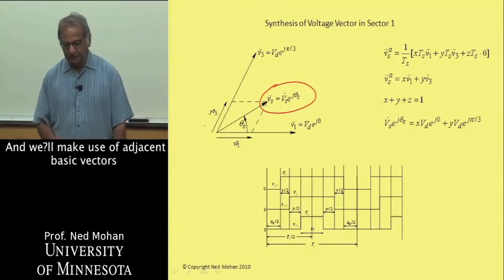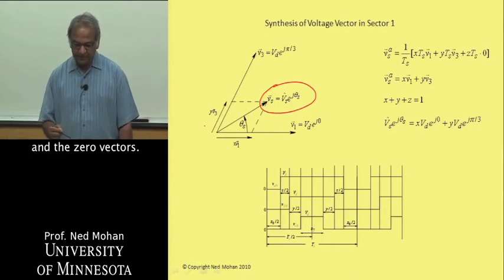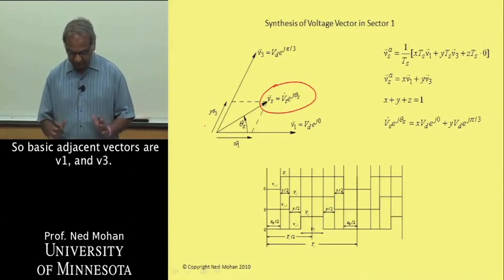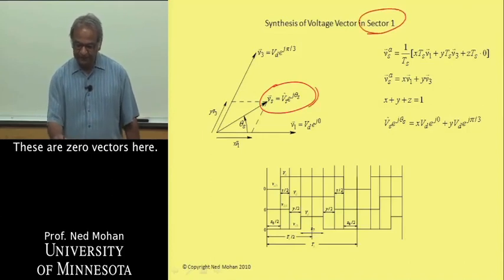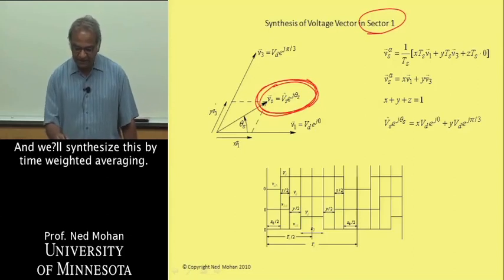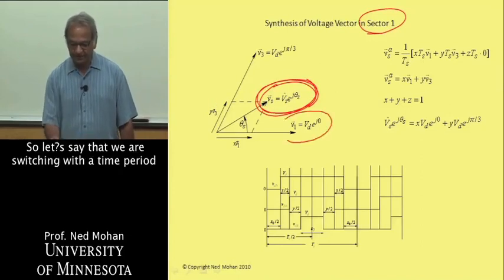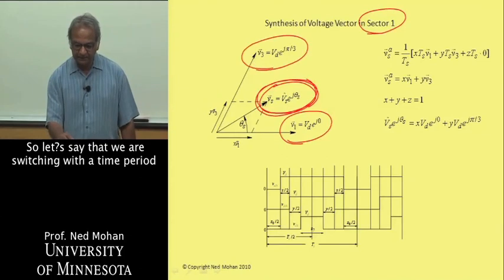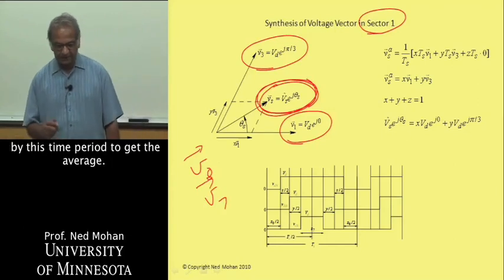What we will do is recognizing that this is in sector one, those basic vectors could be used to define six sectors. Let's say this is sector one here where we need to synthesize this voltage space vector. We will make use of adjacent basic vectors and the zero vectors. So basic adjacent vectors are V1 and V3, and the zero vectors are V0 and V7. These are zero vectors here, so we will make use of that.